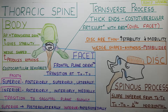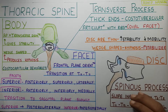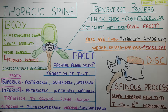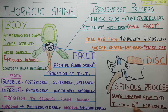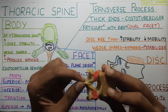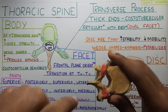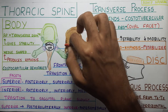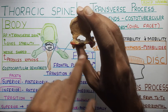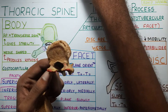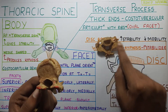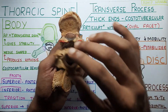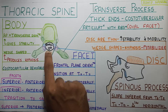Now looking at the spinous process — it has an inferior slope, as seen from T5 to T8. From T11 to T12, the spinous process becomes triangular and horizontal; it comes out horizontally rather than angling downward. Apart from this, there is also the vertebral foramen, which is very small and more circular in the thoracic region. In the cervical region, it was triangular and bigger — in the thoracic, it is small and circular.